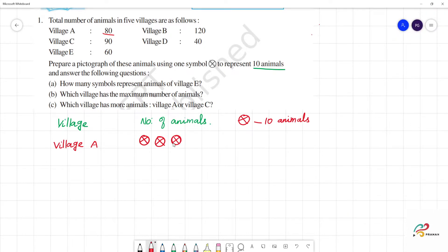Drawing the symbols: 5, 6, 7, 8. So, village A has 80 animals.